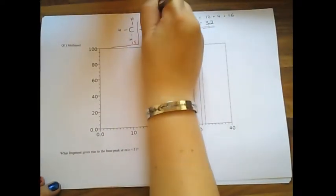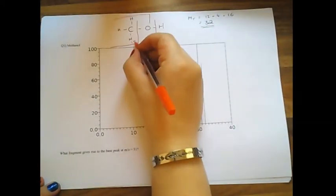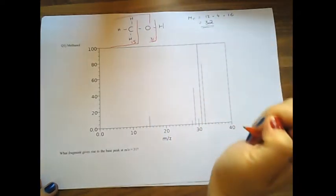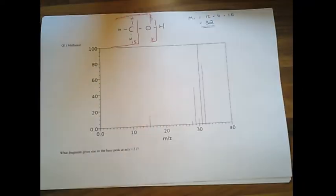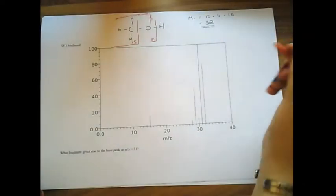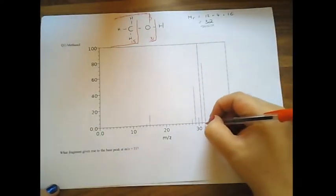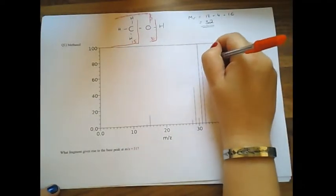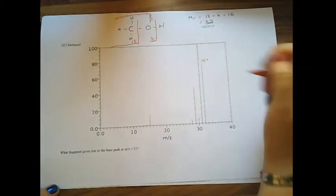And then we could have a little break there as well. So what would that be? 15 plus the 16, oh 31, I've already done that. Okay so let's try to match that up to the actual spectra there. So there's the 32, so the 32 is your molecular ion peak. So I can label that with M plus.